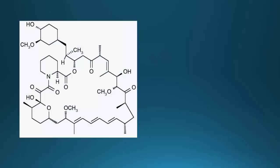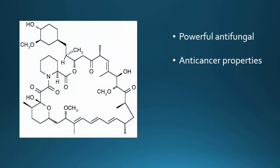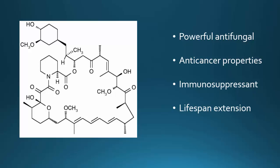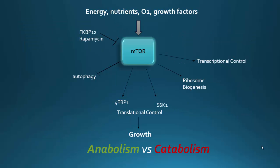Later experiments with Rapamycin showed powerful and seemingly unrelated properties. Besides being antifungal, Rapamycin was found to have anti-cancer and anti-tumor properties, act as an immunosuppressant, and cause a 10-20% lifespan extension in mice and a 50% lifespan extension in C. elegans. All of these properties were eventually linked back to the suppression of mTOR activity by Rapamycin.